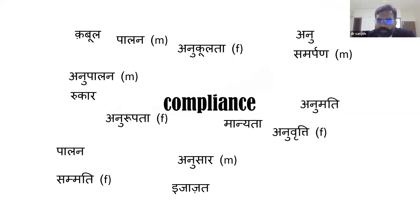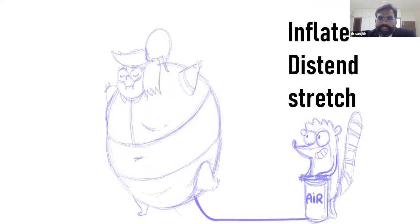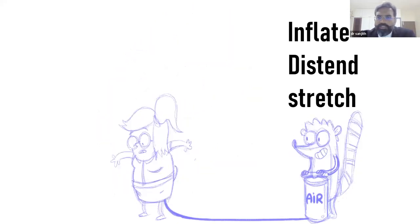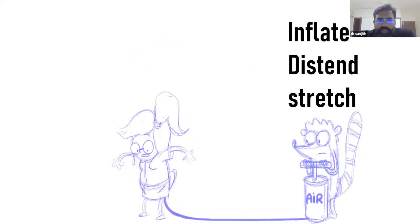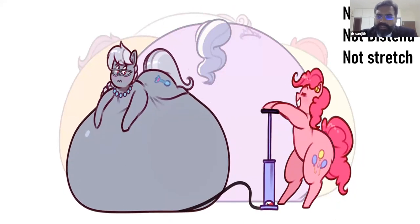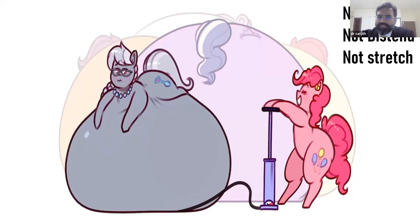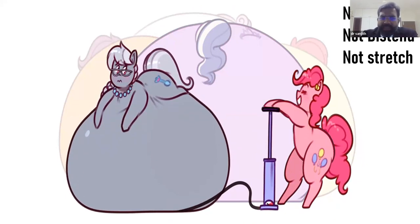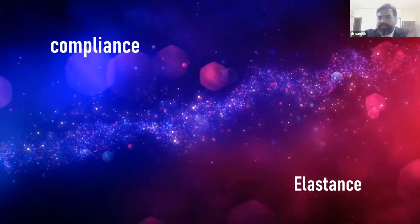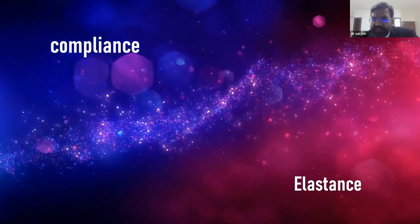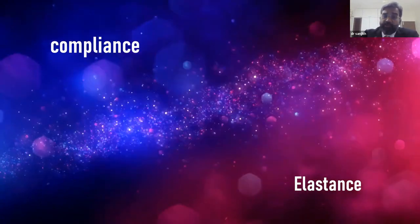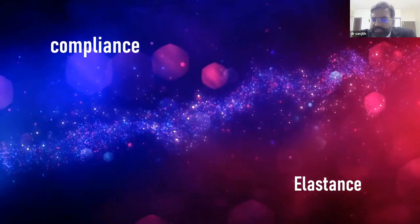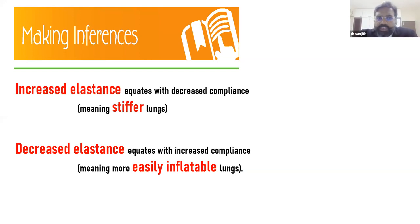Today's topics include P-peak, P-plateau, P-recruitment, PPP, P0.1, and proning. Starting with basics: compliance is the ability to inflate, distend, or stretch a structure. Elastance is the opposite — the ability to return to its original state. Increased elastance equals decreased compliance, meaning a stiffer lung. Decreased elastance equals increased compliance, meaning more easily inflatable lungs.